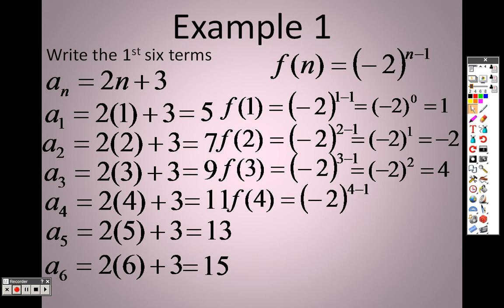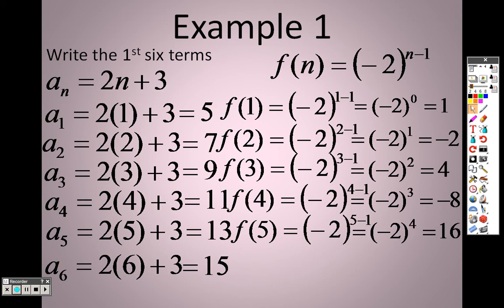Plug in the fourth term, 4 minus 1 is 3, and negative 2 to the third is negative 8. If I plug in a 5, 5 minus 1 is 4, so negative 2 to the fourth is positive 16. If I plug in a 6, 6 minus 1 is 5, negative 2 to the fifth is negative 32. By plugging in the terms, to find the first six terms, all we did was plug in the numbers respectively.